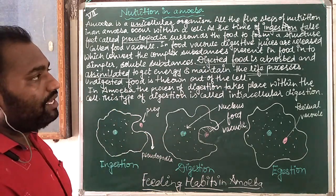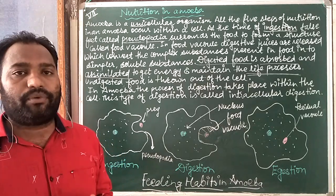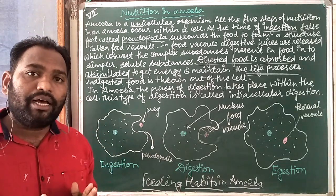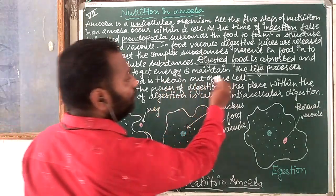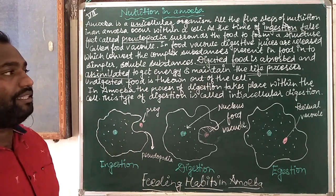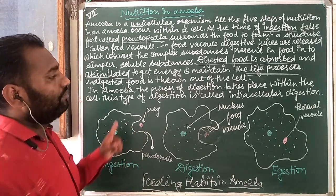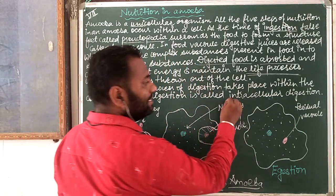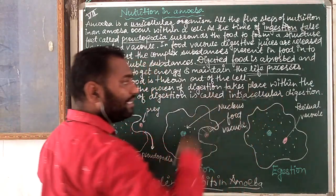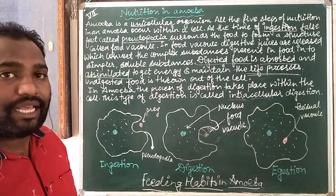Undigested food is thrown out of the cell. Once food is digested, absorbed, and assimilated, the unwanted and undigested food is thrown out from the body or cell. In amoeba, the process of digestion takes place within the cell — that is why it is known as intracellular digestion. 'Intra' means inside and 'cellular' means cell. If digestion occurs outside the cell, it is known as extracellular digestion.